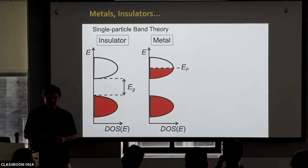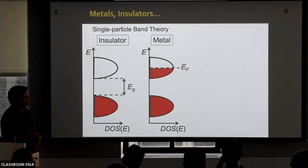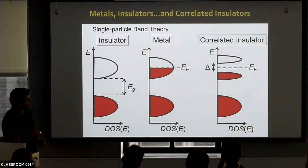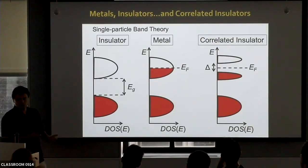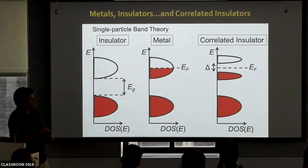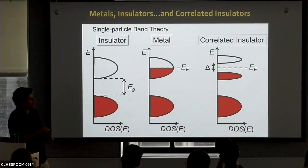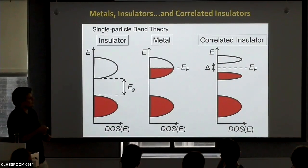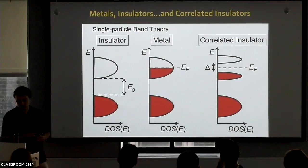When you include interactions between electrons, things can change. You can be in a situation where your Fermi energy is in the middle of a band — the system should be a metal — but due to strong interactions, a correlated gap appears. This gap is not a single-particle gap; it splits the band into two sub-bands, one full and one empty. So you sort of go back to an insulating situation, except this is happening in a system that in single-particle calculations should be a metal — this turns out to be a correlated insulator.